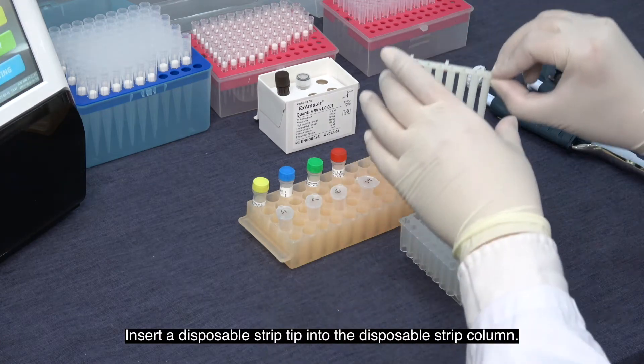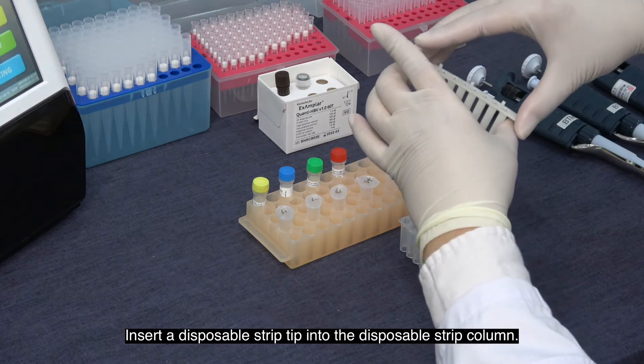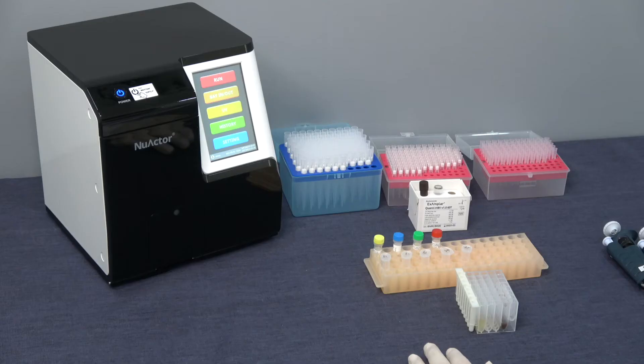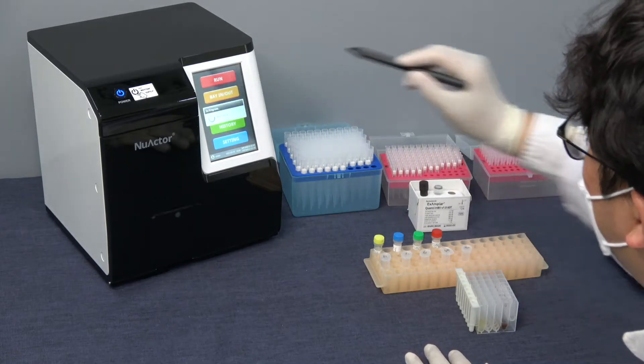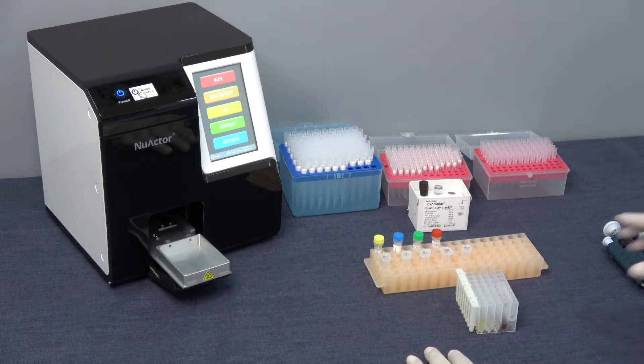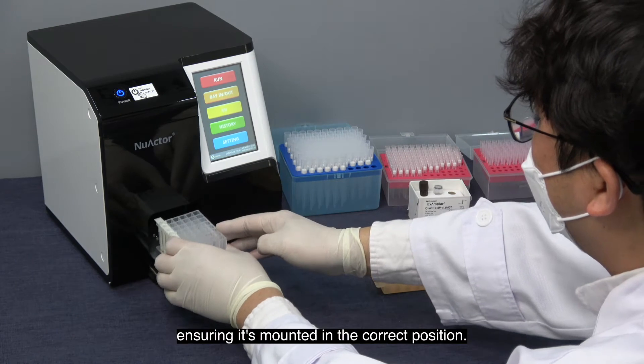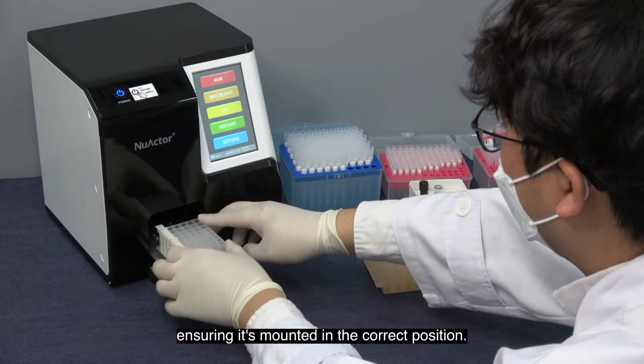Insert a disposable strip tip into the disposable strip column. Load the cartridge onto the extractor's cartridge bay ensuring it's mounted in the correct position.